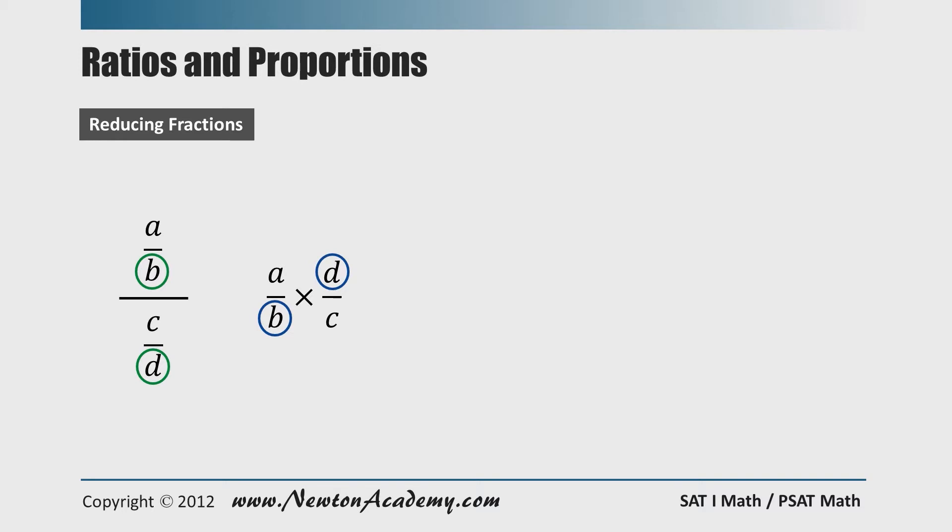We have a very important shortcut method now. When we have a division of fractions, we can reduce a numerator on the top with a numerator on the bottom, in this case A and C. And we can reduce a denominator on the top with a denominator on the bottom, in this case B and D.